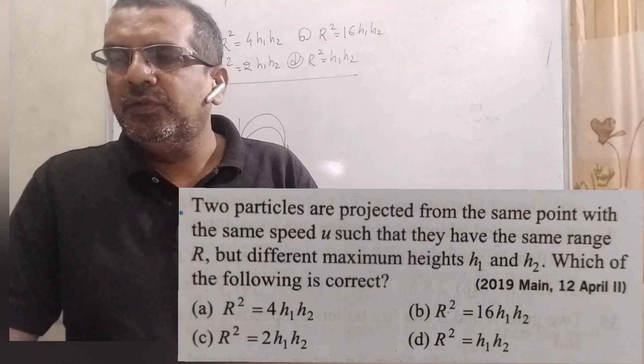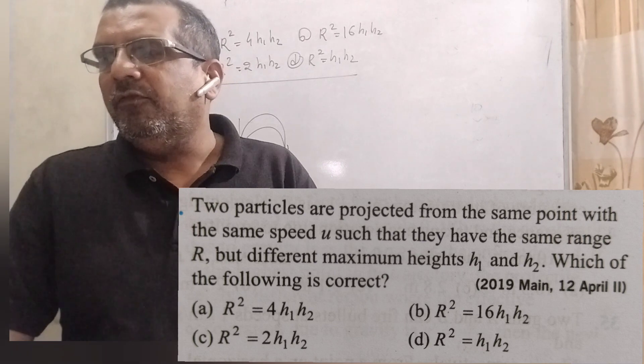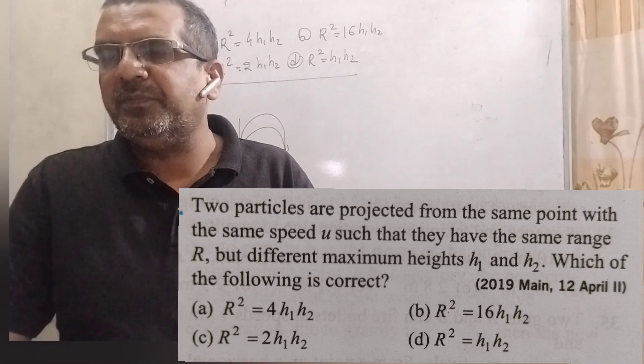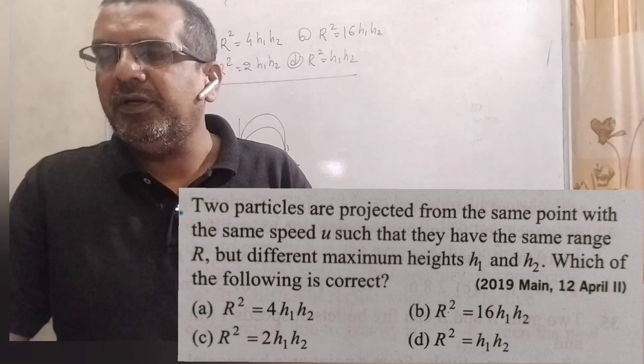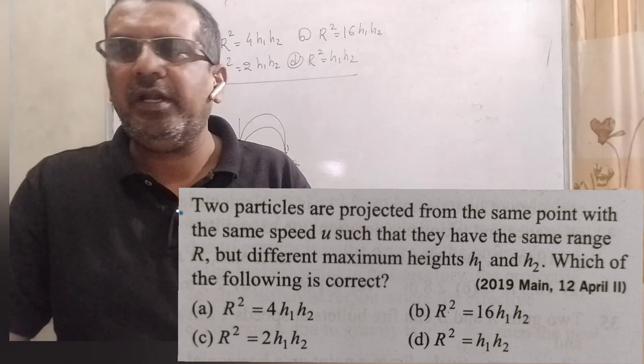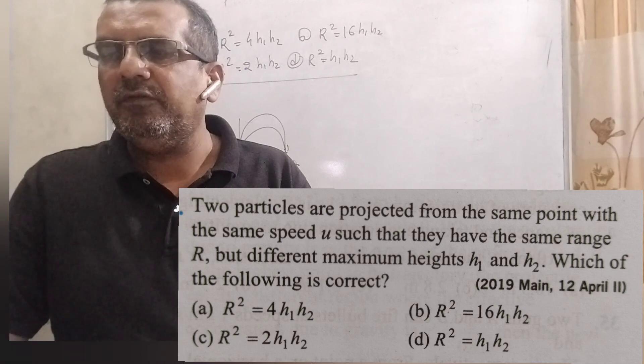Now here is the question. Two particles are projected from the same point with the same speed u such that they have the same range r but different maximum heights h1 and h2. Which of the following is correct?